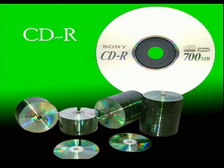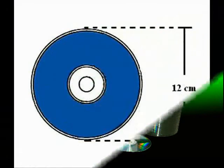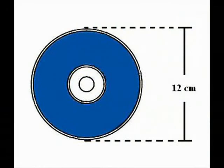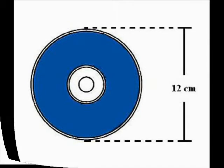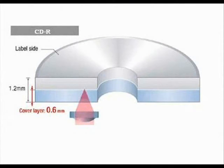CD was developed in 1993. CD is a record data storage disc — it is circular with a hole at the center. It is 12 cm in diameter and 1.2 mm in thickness.